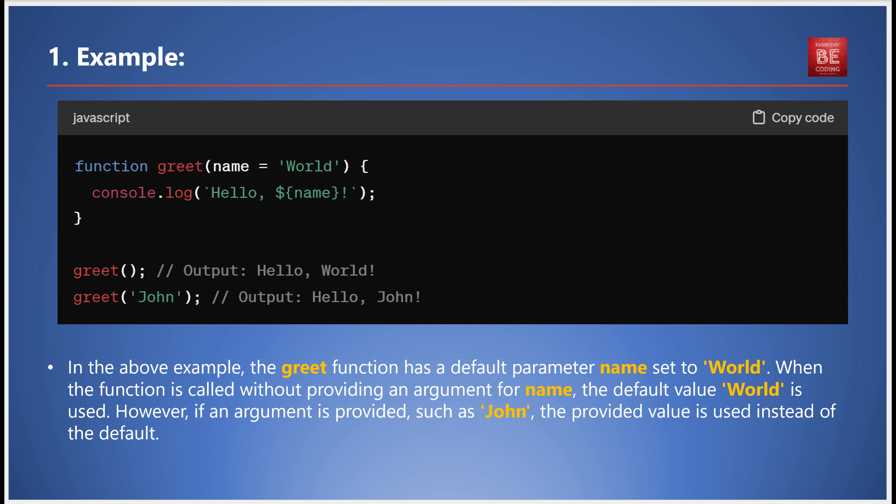So if you call greet, the output will be 'Hello, World'. However, if an argument is provided, such as 'John', the provided value is used instead of the default, so it outputs 'Hello, John'.